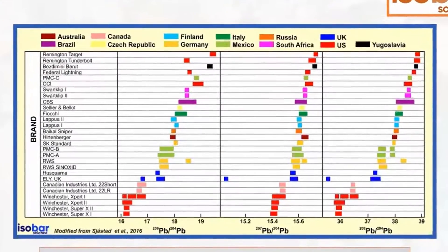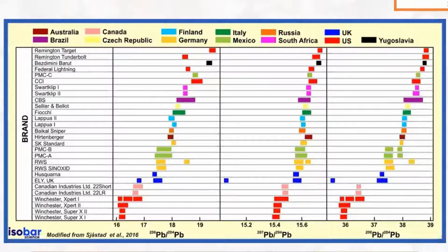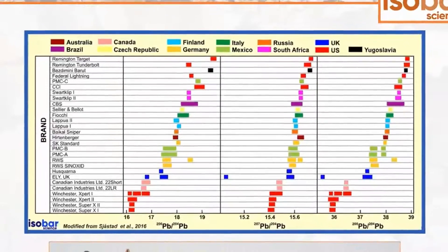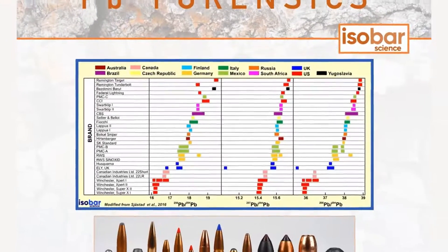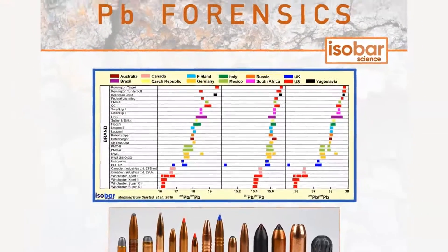You may recognize this plot from our isobar website — it shows the lead isotopic composition for different brands of bullets. In this way, lead isotopes can be used to match a bullet found at a crime scene with bullets from potential suspects. This is particularly useful when the full bullet is not available for ballistics testing.